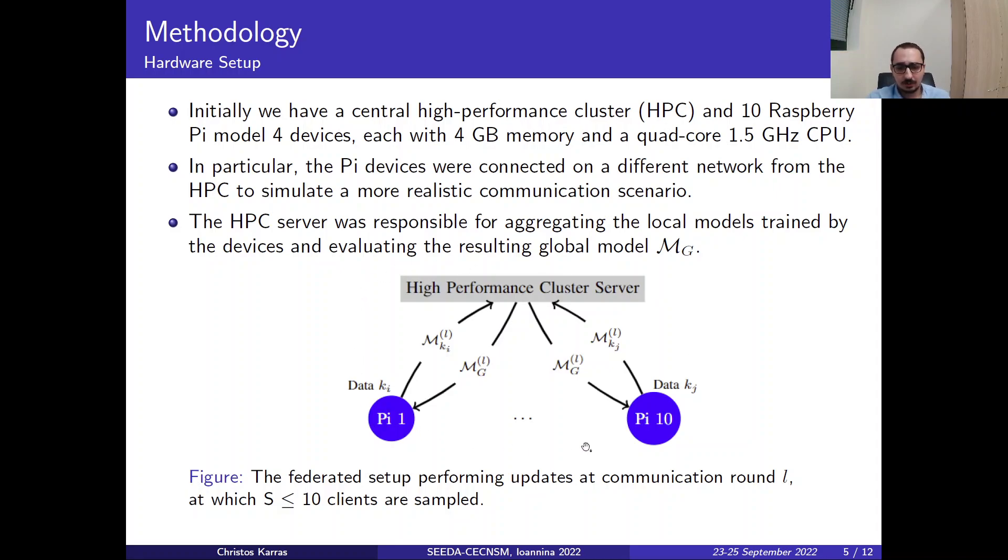Here we have a graphic representation of the whole structure. We have the first device as Pi1. We have the data as Ki and the local model of this device which is MKiL for the number of rounds. This is the number of the communication rounds between the PI device and the HPC server.